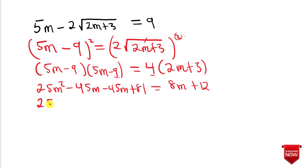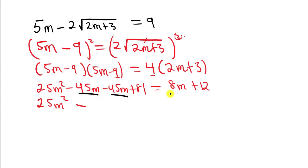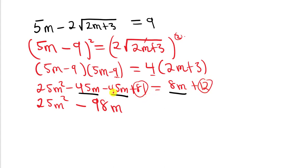We are going to have 25m squared. For the m terms, we have minus 45m and minus 45m, and the 8m transposes to the other side. Combining all that gives us minus 98m. For the constant terms, the 81 remains and the 12 transposes, giving 81 minus 12, which is positive 69. So we have 25m squared minus 98m plus 69 equals 0.